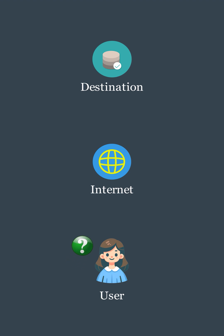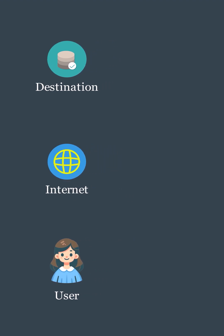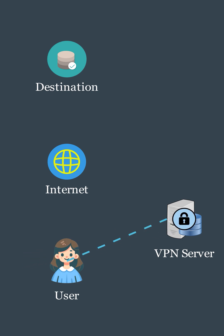When you send a query on the internet, it goes directly to the destination via the internet and returns with the result. However, with a VPN, the process is different. When you connect to a VPN on your device, the VPN client first encrypts your data before it leaves your device. This encrypted data is then sent to the VPN server via a VPN tunnel, which ensures that your IP address remains hidden, adding a layer of anonymity.